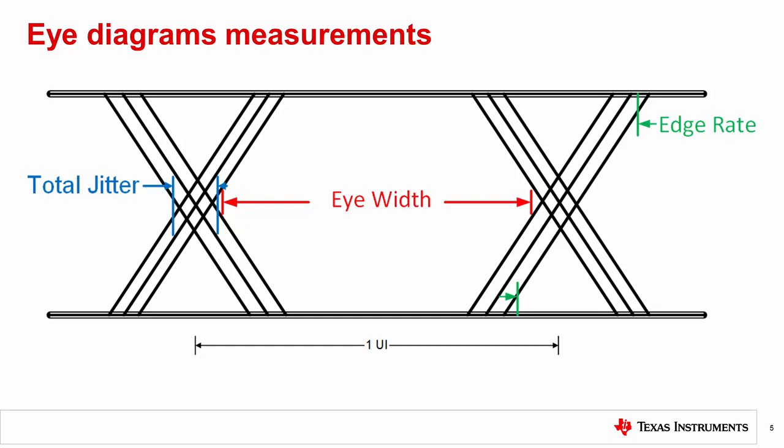As total jitter increases, the available eye width of your signal decreases and affects how the receiver samples the transmitted data. The eye opening can also be used to extract an estimate for bit error rate for the specific eye diagram. Systems with large amounts of total jitter tend to have poor signal performance and probably suffer from high bit error rate due to smaller eye opening and may not pass an eye mask.